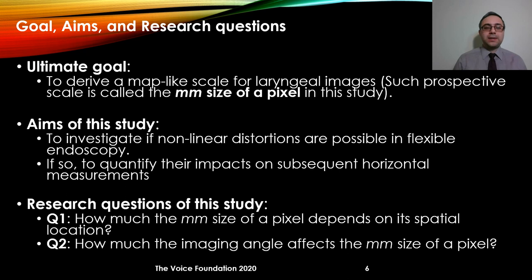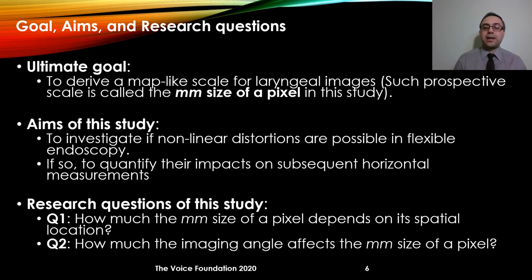The ultimate goal of this research is to derive a map-like scale for laryngeal images, which we will call the millimeter size of a pixel. The specific aims are to investigate if non-linear distortions are possible in flexible endoscopy and, if present, to quantify their impact on horizontal measurement. There are two research questions: first, how much does the millimeter size of a pixel depend on its spatial location; and second, how much does the imaging angle affect the millimeter size of a pixel.